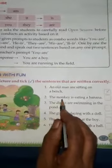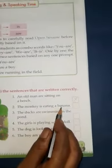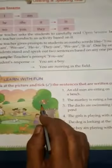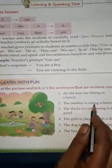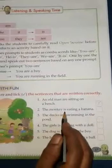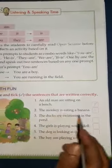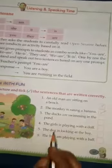Number two: The monkey is eating a banana. Here one monkey is there and the monkey is eating a banana. With a singular naming word 'is' is used, so it is a correct sentence.